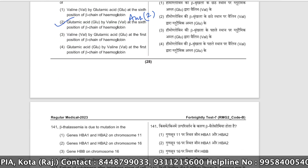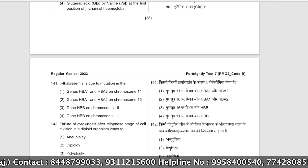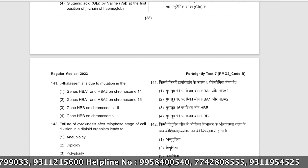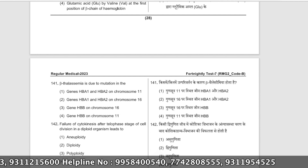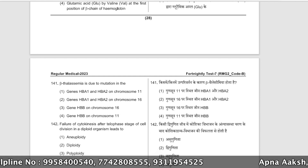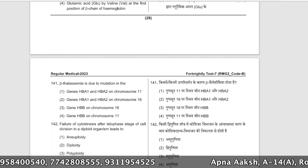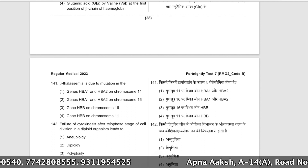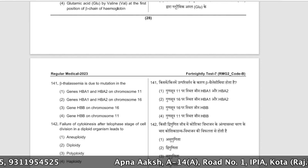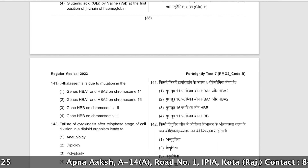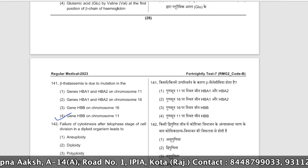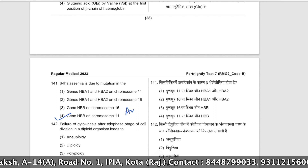Beta thalassemia is also a blood disorder caused by a mutation in the hemoglobin gene located on chromosome 11. Due to this mutation, hemoglobin production is affected. The correct answer is option number four.